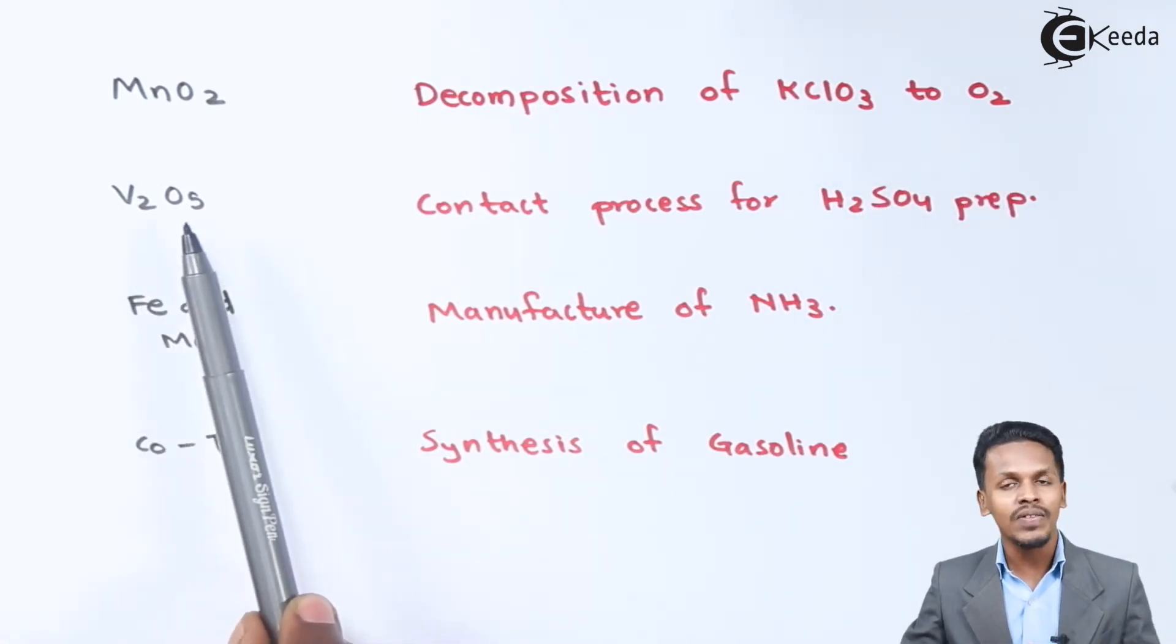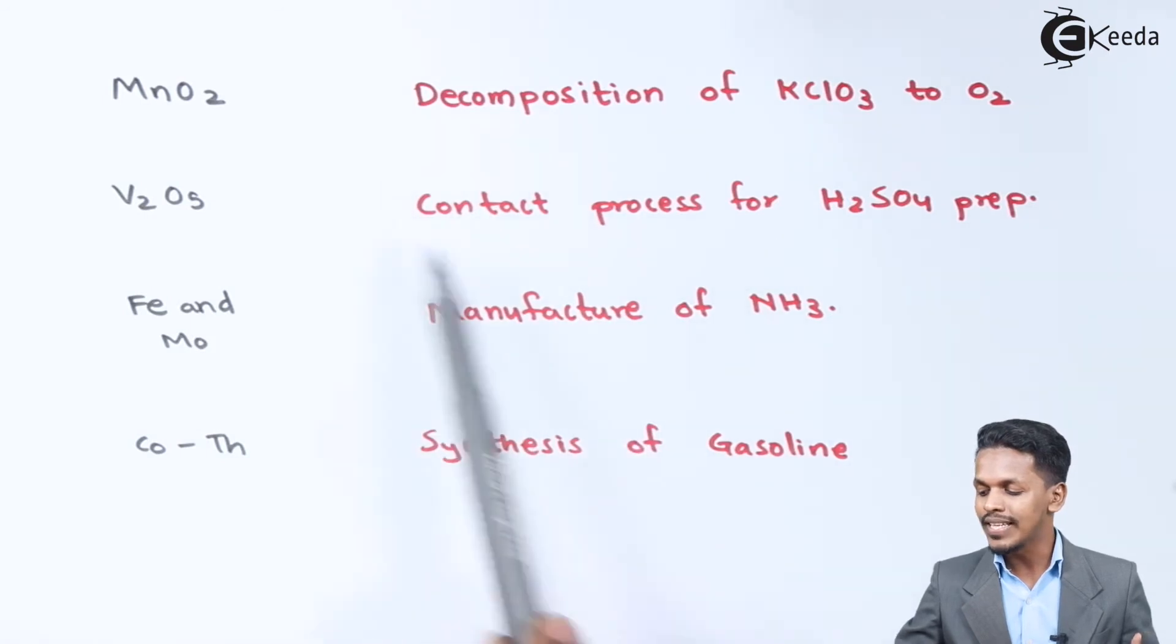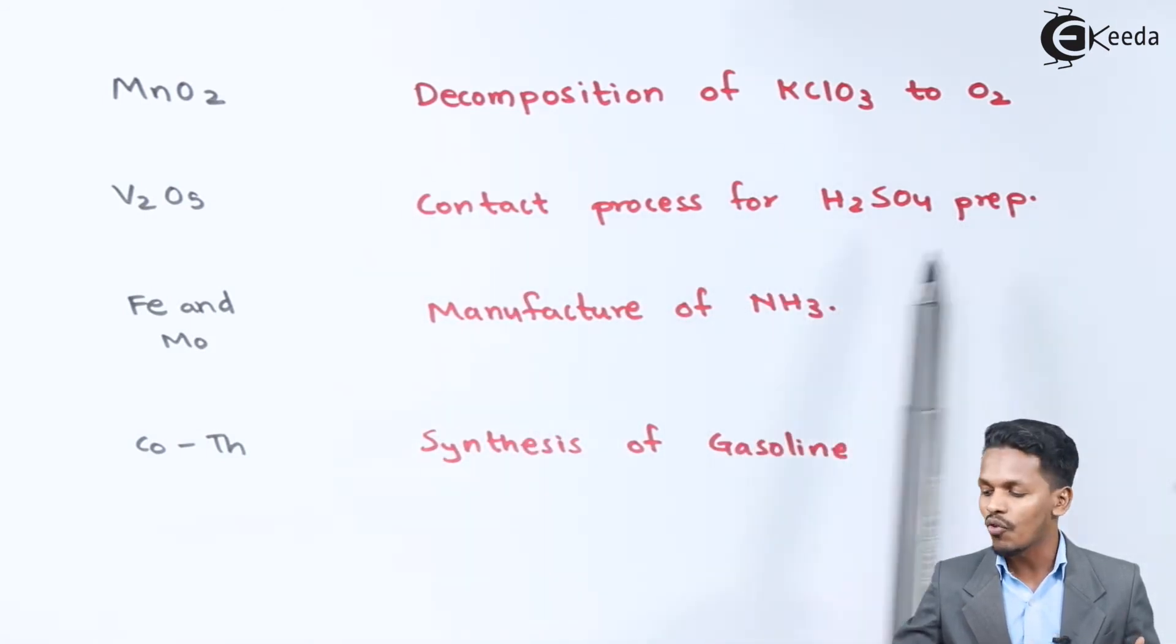Vanadium pentoxide, V2O5, is used in the contact process for the manufacturing of H2SO4.